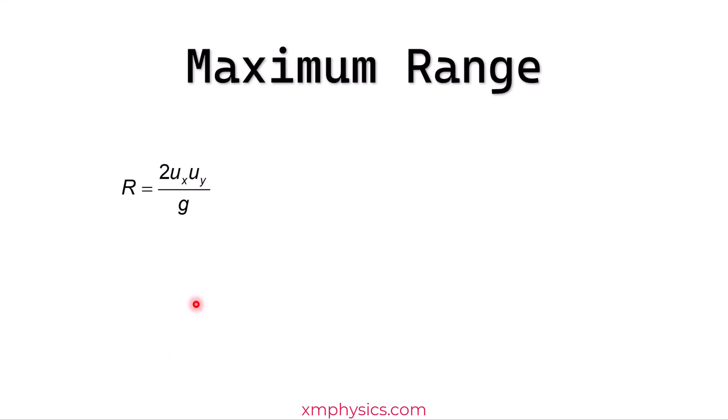So coming back to that formula we had just now, the horizontal range depends on both the horizontal velocity and the initial vertical velocity. So instead of ux and uy, let's write them as u cosine theta and u sine theta.